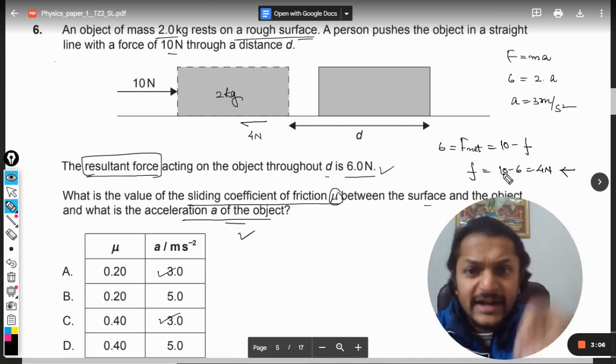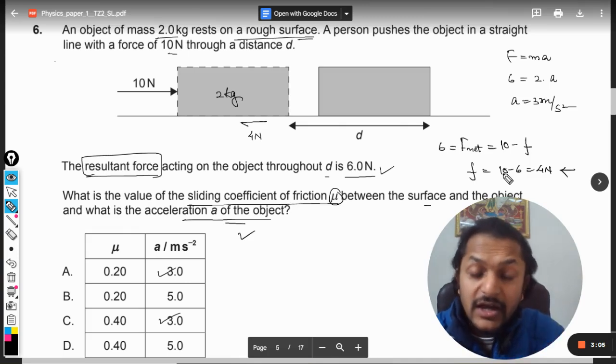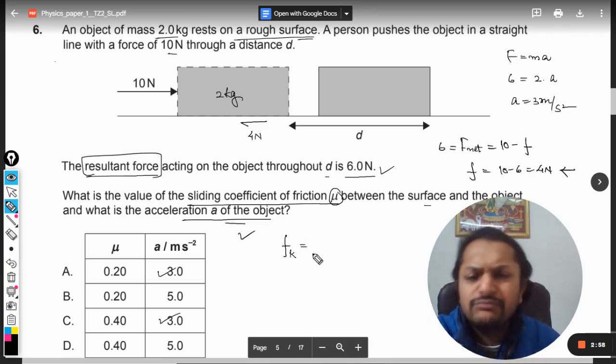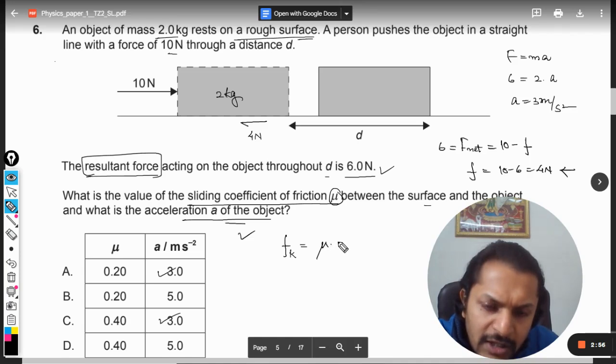Frictional force that is acting on the body when it is moving. Now what is the formula for the friction? So we say that F_k, because it is moving kinetic or dynamic, whatever you want to call it, will be μ into N.